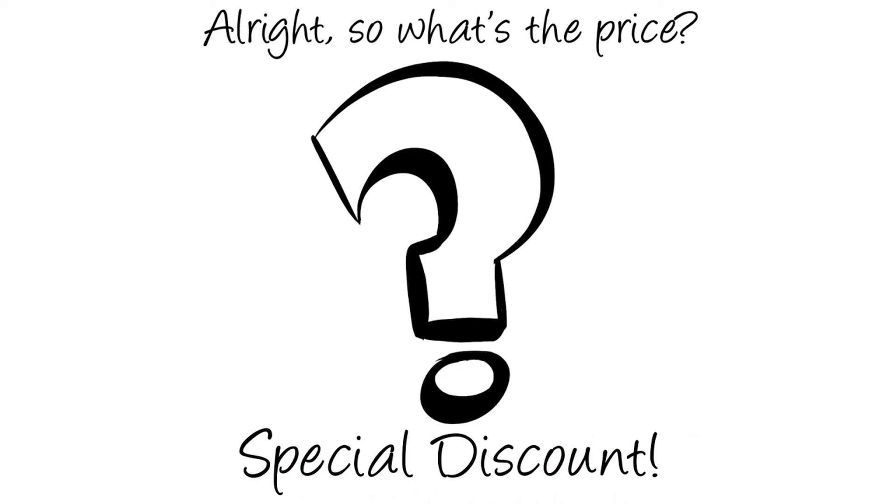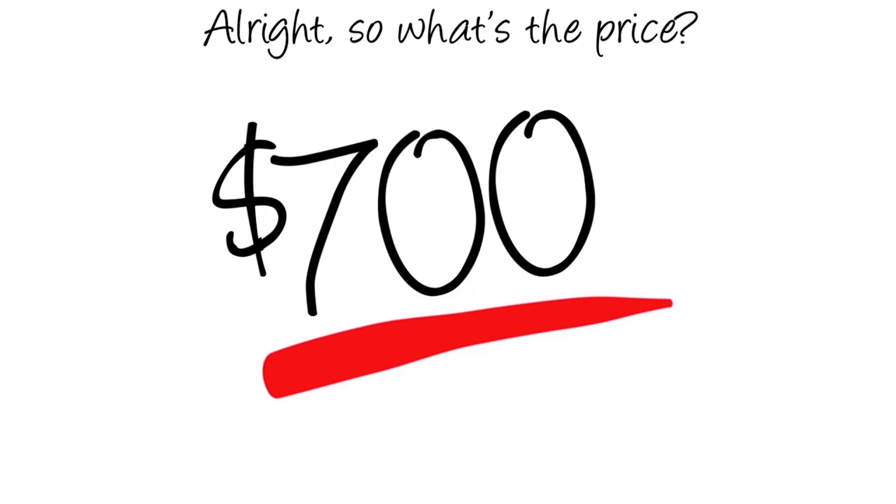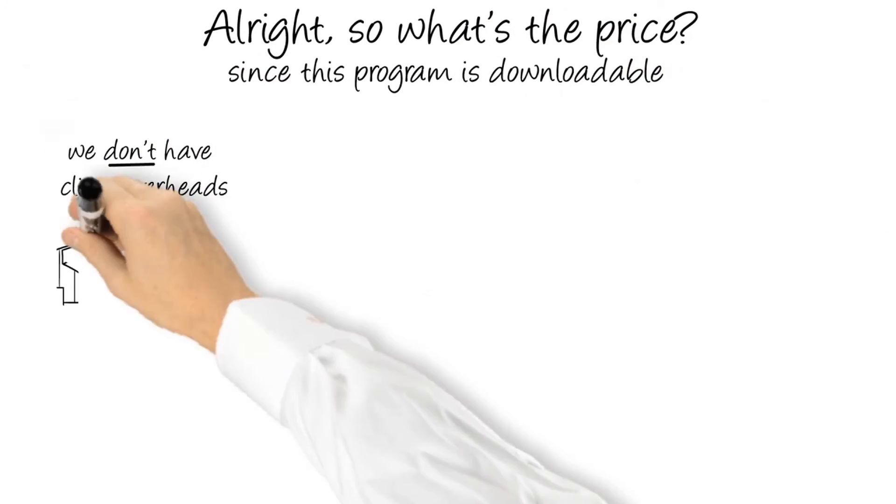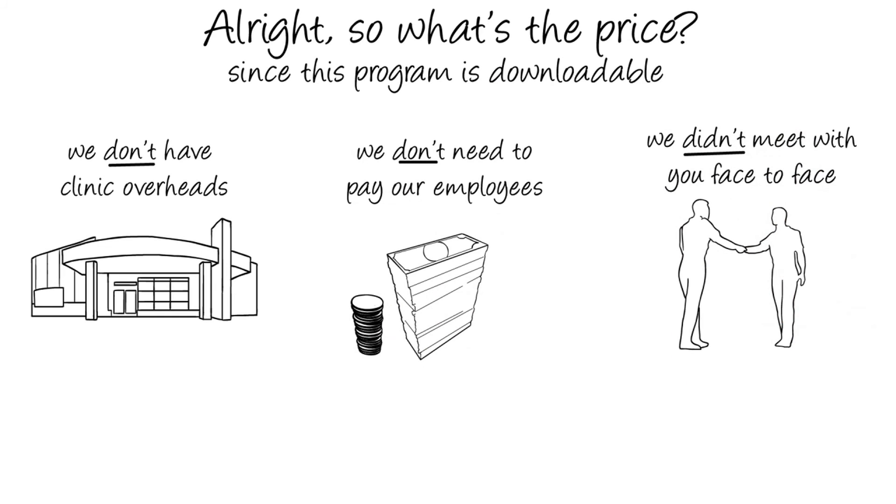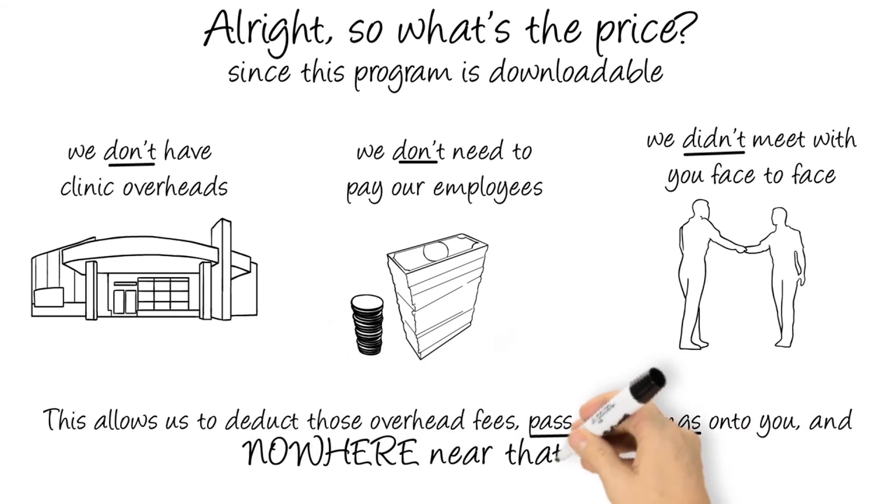The regular price, and the price that others have paid for this information, is a lot higher. The regular price for the methods we disclose, in Fat Loss for Grown-Ups, is around $700. Which is what Dr. Thornton typically charges in her clinic to meet with one of her patients. Now, and this is where you score big, since this program is downloadable, we don't have clinic overheads. We don't need to pay our employees, we didn't meet with you face-to-face, and we don't need to ship it to you. This allows us to deduct those overhead fees, pass the savings on to you, and charge nowhere near that much.